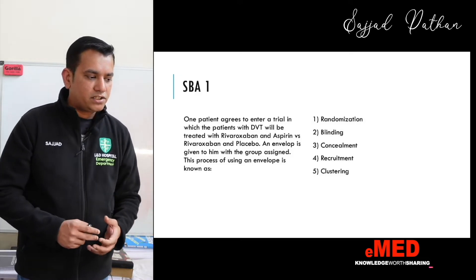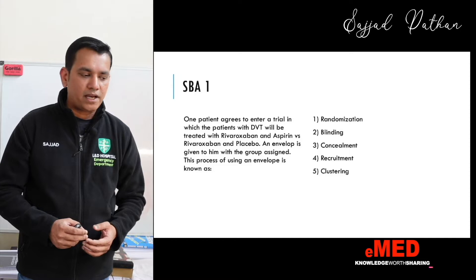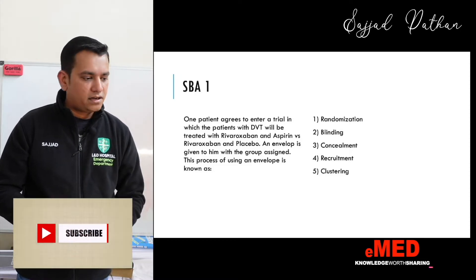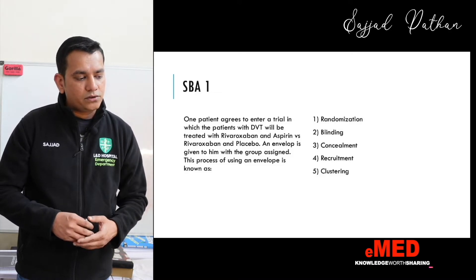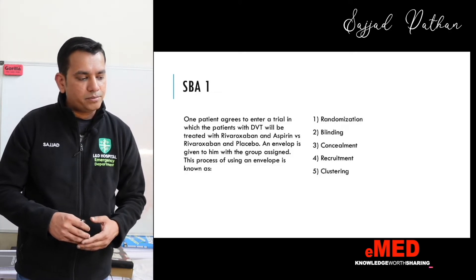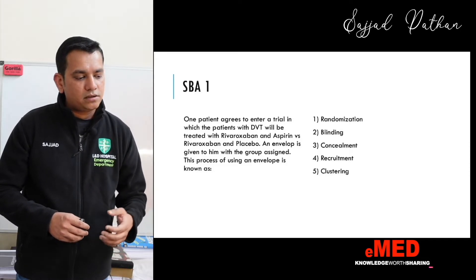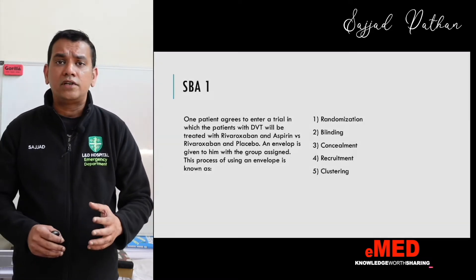One patient agrees to enter a trial in which patients with DVT will be treated with rivaroxaban and aspirin versus rivaroxaban and placebo. An envelope is given to him with the group assigned. This process of using an envelope is known as: randomization, blinding, concealment, recruitment, or clustering?